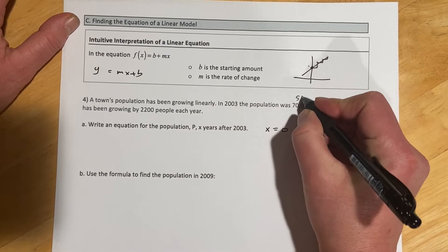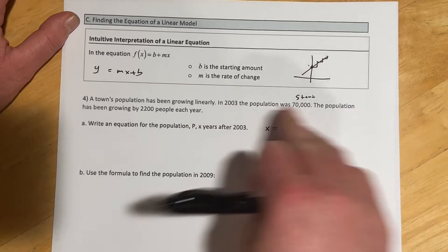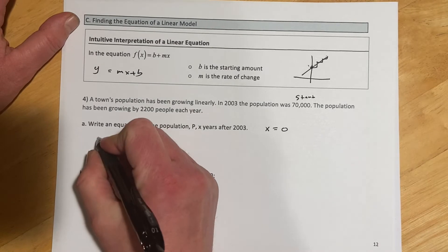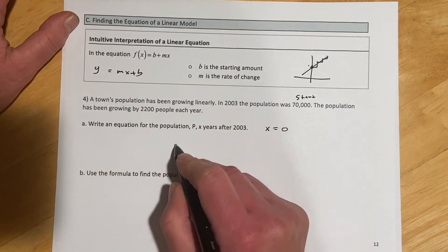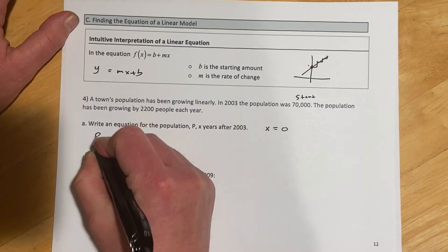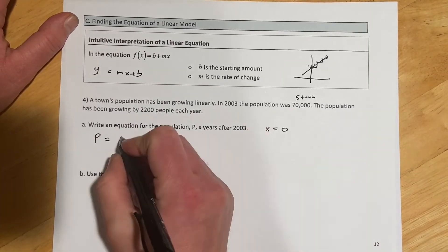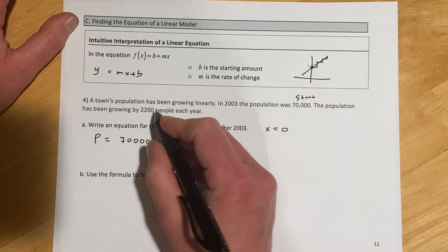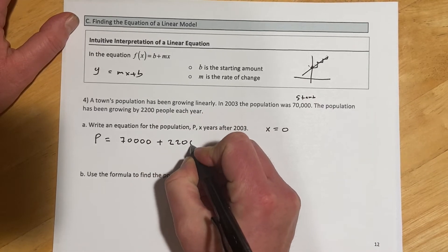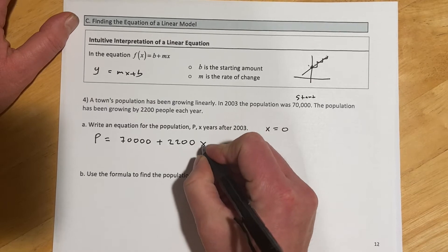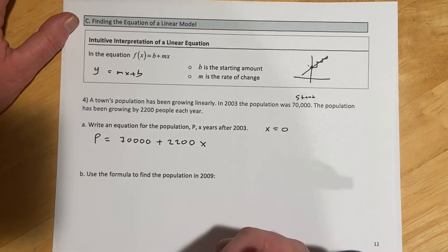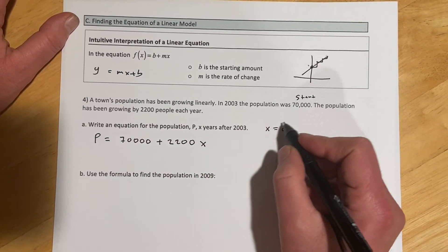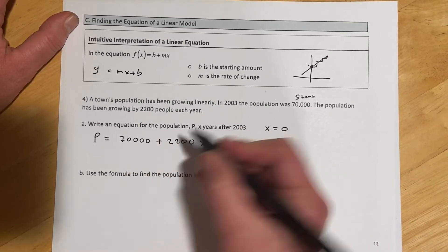So this is going to be like our starting amount. In 2003, we're starting at 70,000, and then the population is going to increase, so it will be plus 2,200 people each year thereafter. We're supposed to use p equals starting amount at 70,000, and then plus how it's going to change, which is the 2,200. That's going to be our slope, our per year times x, which is each year after 2003. So when x is 0, 2003, it's 70,000, and then when x is 1, which would be 2004, we'd have this plus the 2,200.